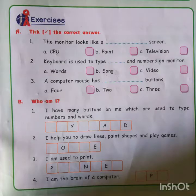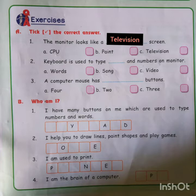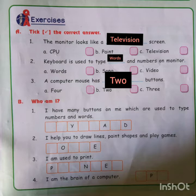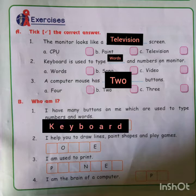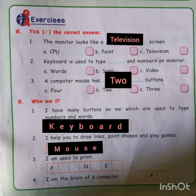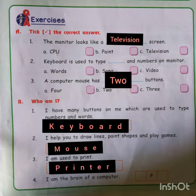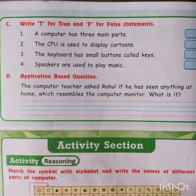Now moving to the question and answer section. First: the monitor looks like a television screen. Second: the keyboard is used to type words and numbers. Third: a computer mouse has two buttons. Next, 'Who am I?' questions — I have many buttons used to type numbers and words: the answer is keyboard. I help you to draw lines, paint shapes, and play games: the answer is mouse. I am used to print: the answer is printer.